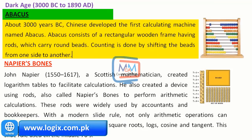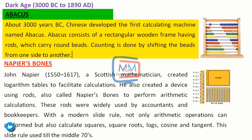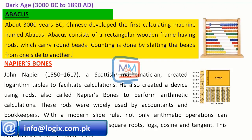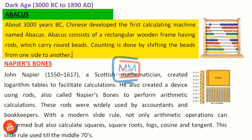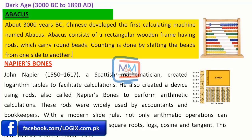The Chinese developed the first calculating machine named abacus. Abacus consists of a rectangular wooden frame having rods which carry round beads. Counting is done by shifting the beads from one side to another.